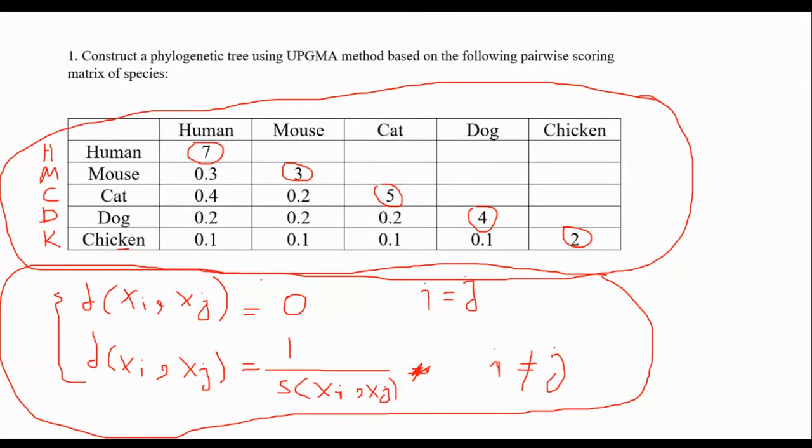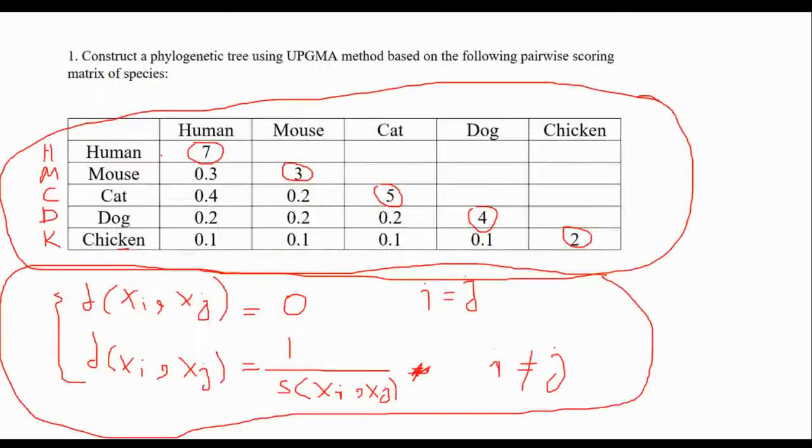So when we say for example i is equal to one j is equal to one it means that we are trying to find the distance between human and human, the same species. So in that case it is right away zero because i and j are zero. In order to write the formula, then in that case you write the distance between human with another human, this is equal to zero. This is equal to zero. Distance between what is the next one, assume that I want to find about this value mouse and human.